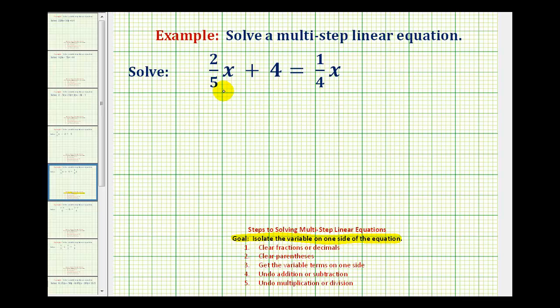To do this we want to multiply every term in the equation by the least common denominator when we have a denominator of five and four, which would also be the least common multiple of five and four. So in this case we want to multiply every term by twenty and that should eliminate the fractions from the equation.